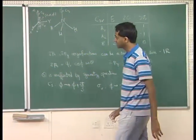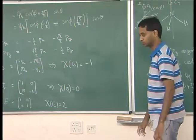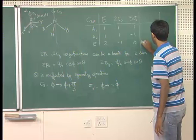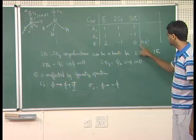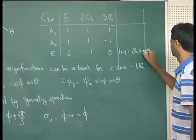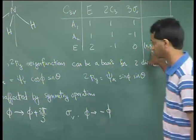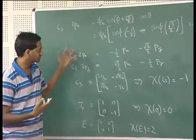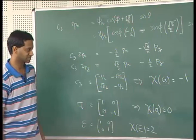The characters 2, -1, 0 match exactly the two-dimensional irreducible representation of this group. So p_x and p_y form a basis for a two-dimensional irreducible representation of this group. In the character table of the group, x and y transform as p_x and p_y, forming a two-dimensional irreducible representation. We can use these eigenfunctions to generate a two-dimensional irreducible representation of this group.